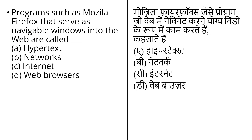The next question is: programs such as Mozilla Firefox that serve as navigable windows into the web are called what? The first option is hypertext. Hypertext provides hyperlinks that are displayed on your computer, and by clicking on them you can reach the main document.